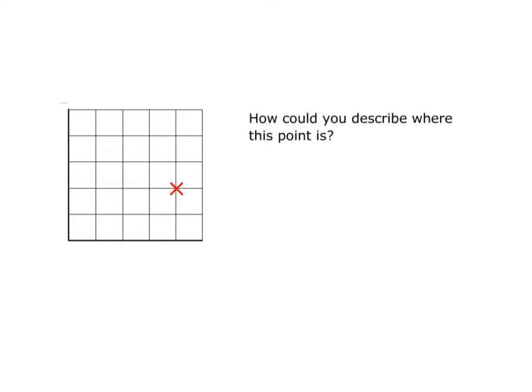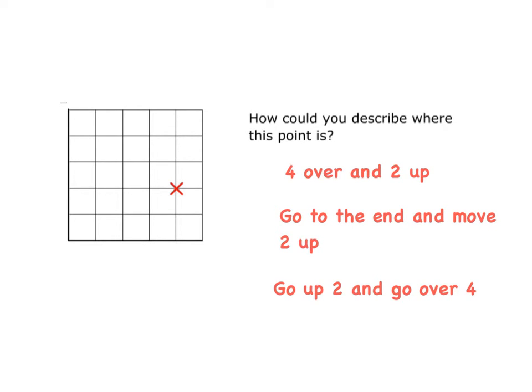And they're perfectly correct. I might have someone say you go to the end, you move two up, and again they're perfectly correct. Someone else might say you go up two and you go over four, and again they are correct. But what we want to do is come up with a universal way that everyone would describe this X in the same way.